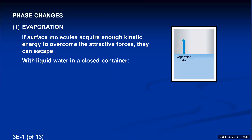Molecules on the surface have some probability of overcoming the attractive forces of the liquid if they gain enough kinetic energy, and they can evaporate. I'll represent the rate of evaporation by an upward-pointing vector — the length of the arrow indicating how fast the water molecules are evaporating each second. Maybe after one second, four water molecules acquire enough kinetic energy to escape from the liquid into the vaporous state. Those four vapor molecules, flying around the top of the container, will eventually collide back into the surface of the liquid.